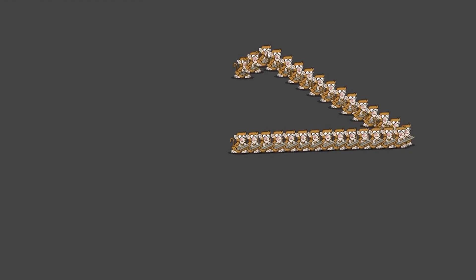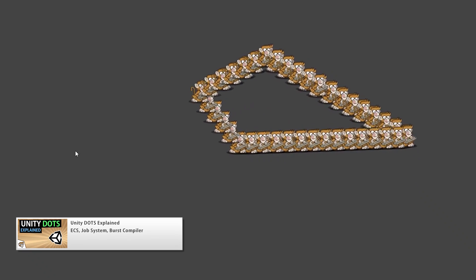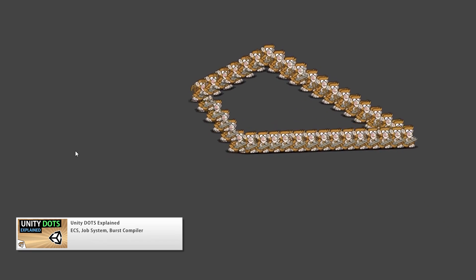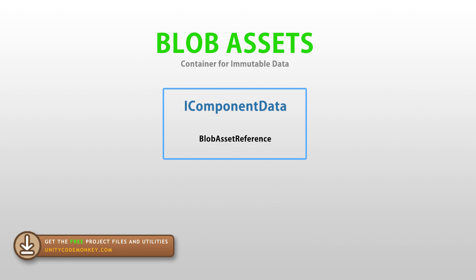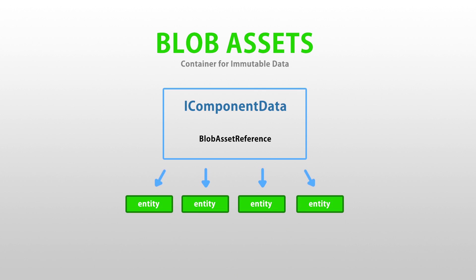Blob assets are a very interesting feature of Unity DOTS. If you're not familiar with Unity DOTS then check the links in the description. Blob assets are essentially containers of immutable data that can be accessed through a reference. You can store a reference to some data that you can then access from all of your entities. Because they are immutable, you can safely read from blob assets from multiple threads at the same time, which means it's insanely performant. This can be useful for any type of data that doesn't change in your game — animations, scriptable objects, fixed world settings, unit stats, pathfinding maps, and so on. You store whatever data you want in a blob asset and read from it concurrently from multiple jobs.